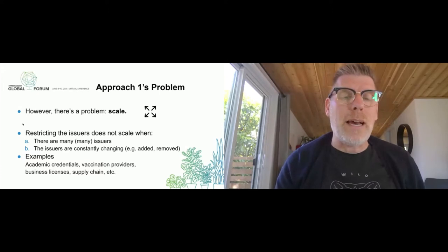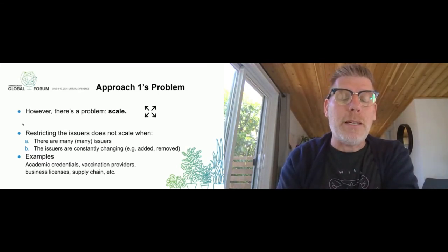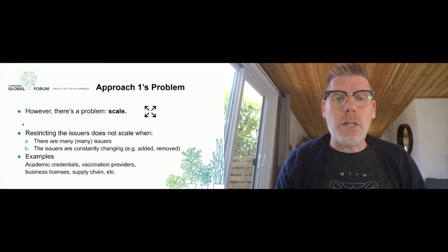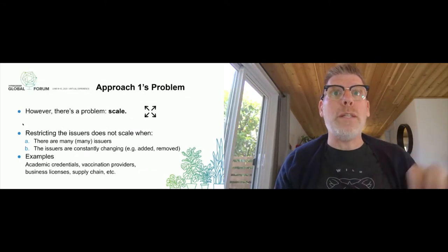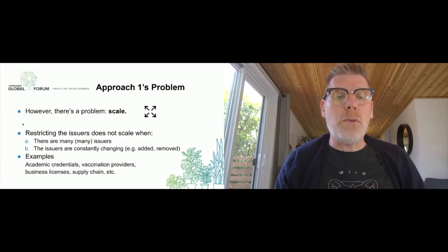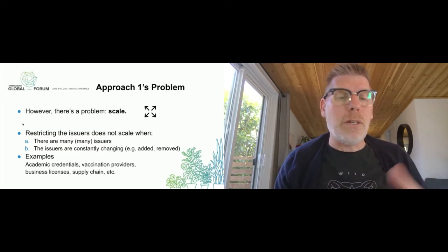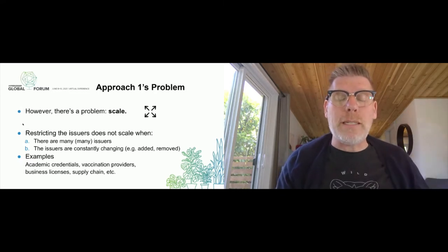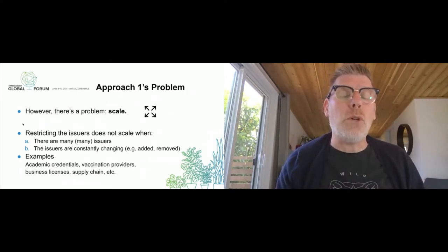Examples of this problem are everywhere. Academic credentials are where a lot of verifiable credentials work started — the common solution is to call back to the issuer to verify. Proof of vaccination has been a major case in 2021, where being able to verify the issuer is genuine has been critical. Business licenses are generally municipal across the world, so knowing who issued one is difficult even in a small area. Supply chain is huge — customers may want to check who issued a credential about a product. These problems arise anywhere you go beyond local use cases.